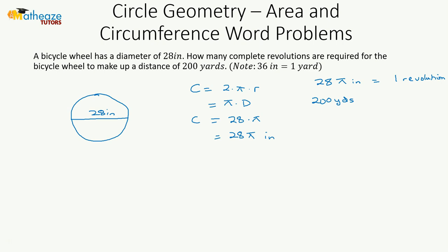So 200 yards, that's going to be equal to 200 times 36 inches, which is 7,200 inches.